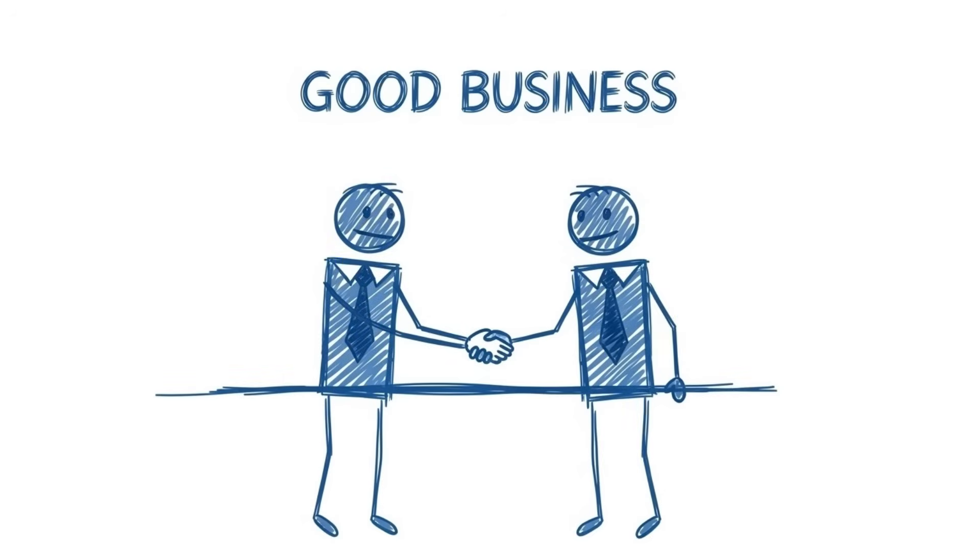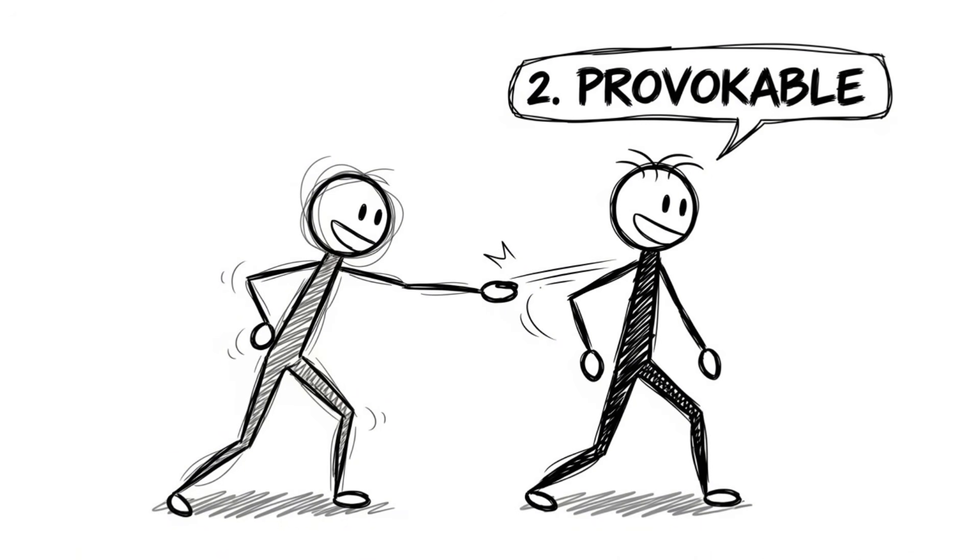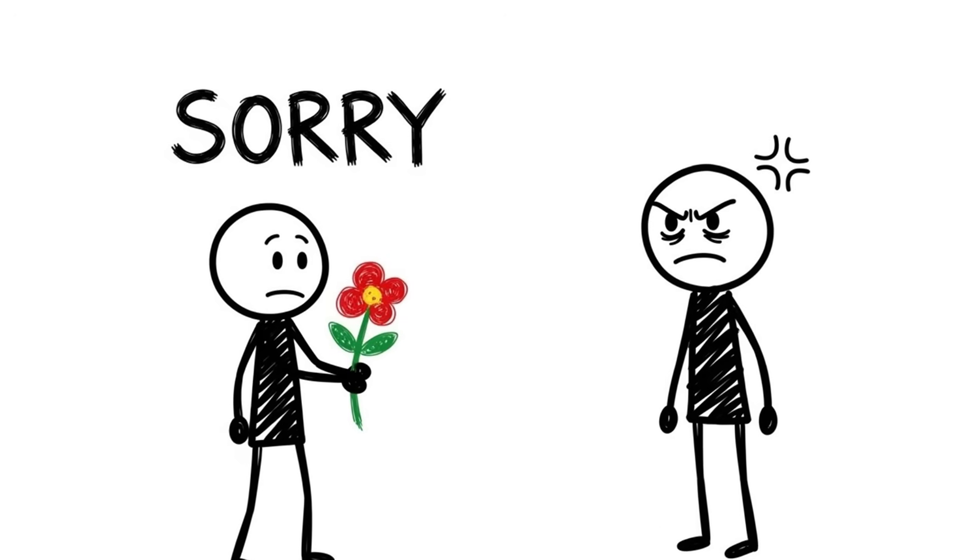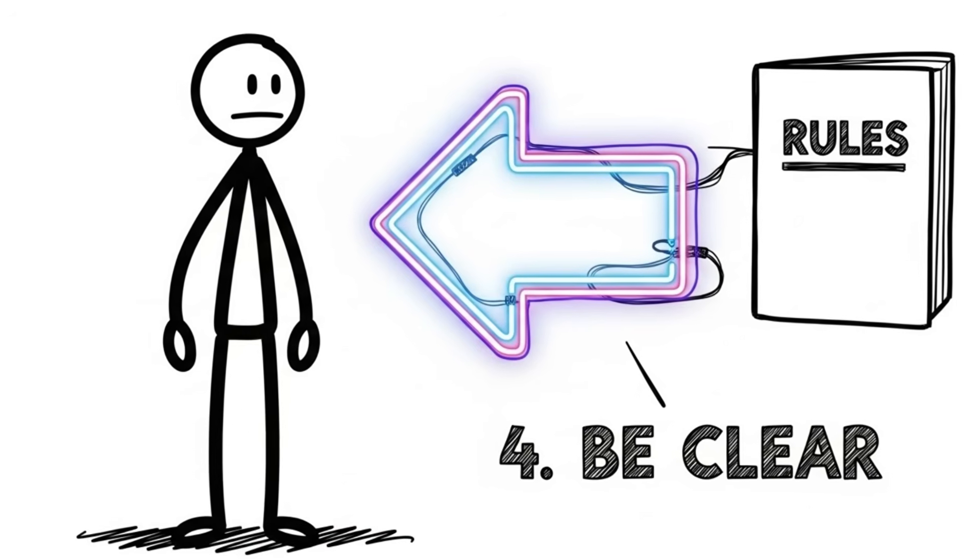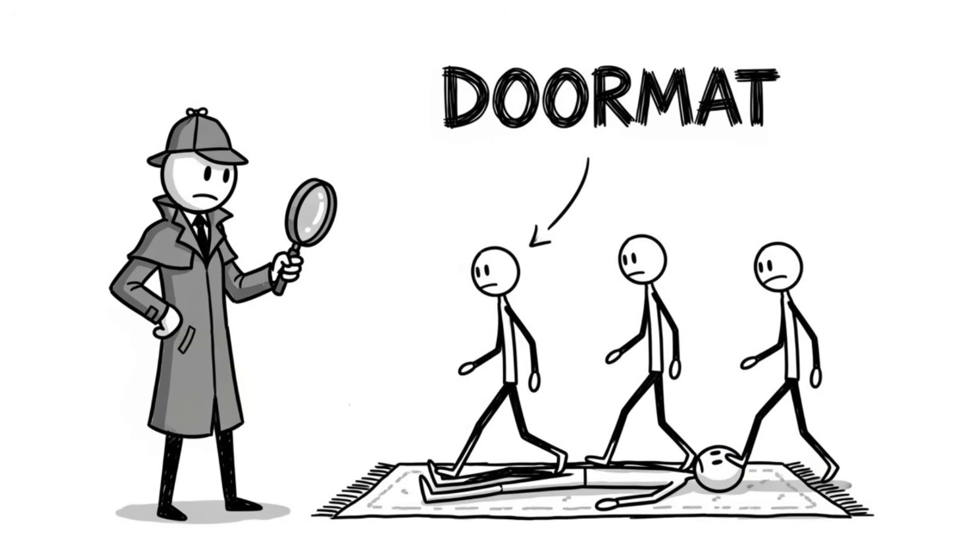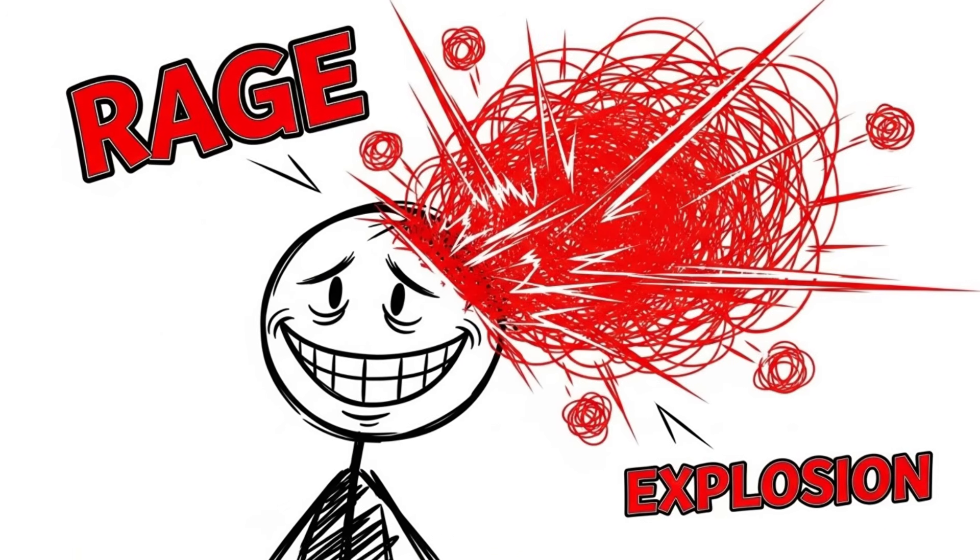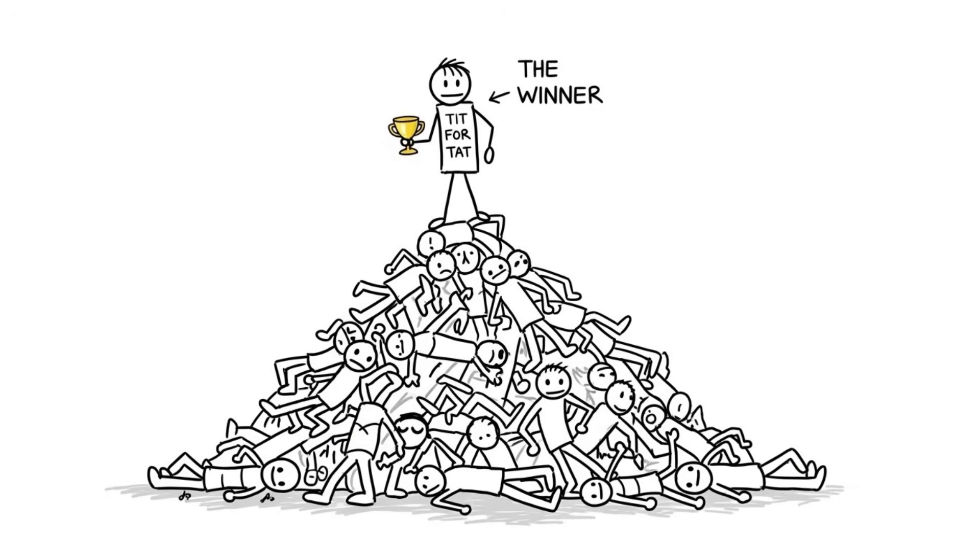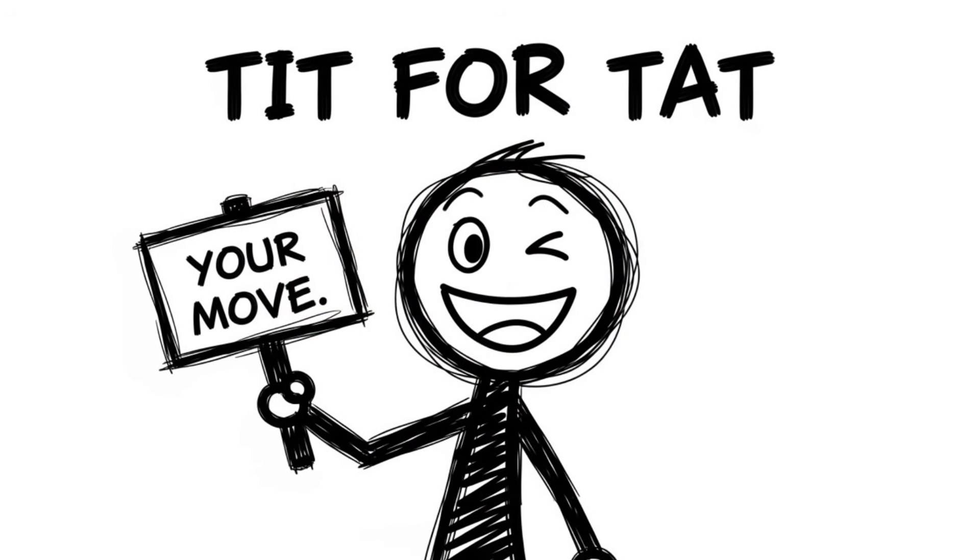This simple rule reveals the four pillars of successful long-term relationships, whether in marriage, friendship, or business. First, be nice. Never be the first to defect. Second, be provocable. If someone crosses a boundary, you must retaliate. You cannot be a doormat. Third, be forgiving. Once you have retaliated, don't hold a grudge. Return to cooperation instantly. And fourth, be clear. Your behavior must be predictable, so people know not to mess with you. People who try to be too nice usually get exploited and then explode in rage, which confuses everyone. Tit for tat wins because it teaches the other player that cooperation is in their interest. It is the mathematical proof of the golden rule, but with teeth.